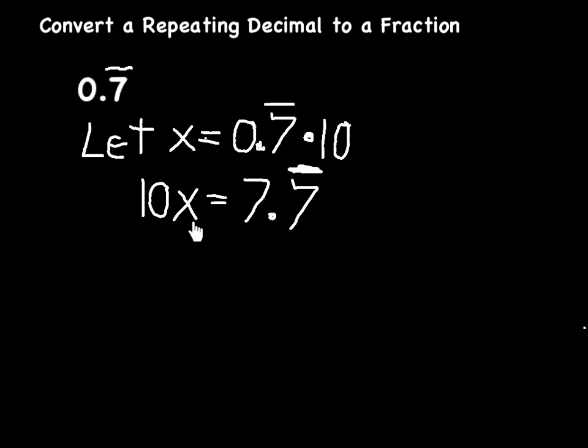So now I have 10x equals 7.7 repeating, and x itself equals 0.7 repeating. I can actually subtract the two. On the left-hand side, I'm going to write 10x minus x. On the right-hand side, I'm going to subtract an equivalent of x, which is 0.7 repeating.